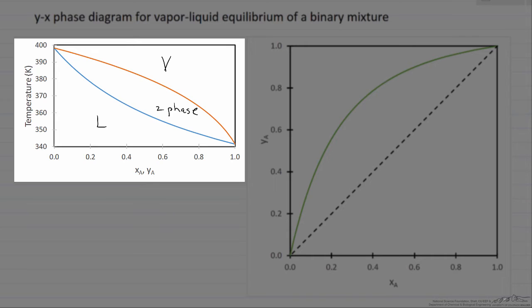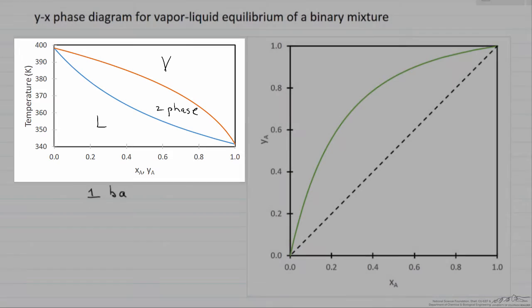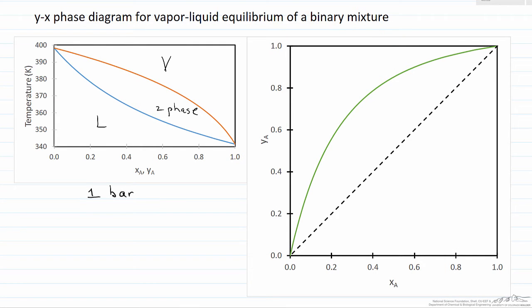This diagram is at one pressure, in this case one bar pressure. We can also read values off this diagram and plot the mole fraction of the gas phase versus the mole fraction of the liquid phase. So y sub a is mole fraction of the gas phase, x sub a is mole fraction of the liquid phase.